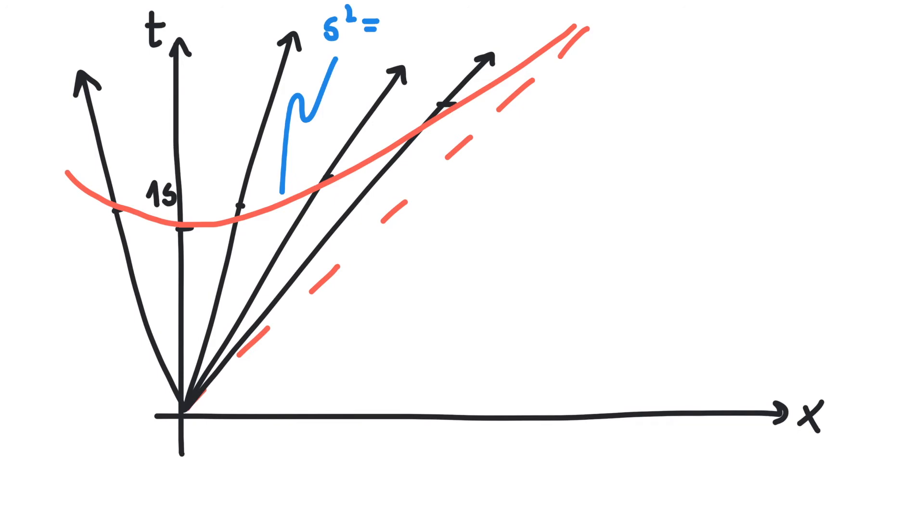The reason for this is that Lorentz transformations do not change s squared, that is distances in Minkowski space.